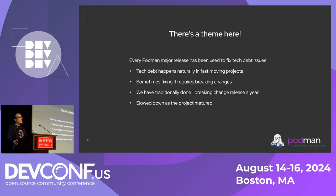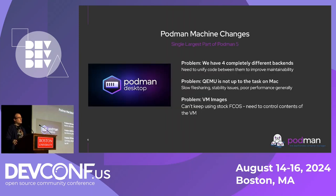Sometimes technical debt happens in user-facing places, in a way that we can't get rid of it without a breaking change. That's what major versions are for in our minds. We tried to maintain a 12-month cadence in the early days — saying we aren't going to introduce deliberate user-facing breaks that often, but we're still giving ourselves an off-valve, a chance to fix things. We are increasing the cadence to 24 months in recognition of us theoretically having a mature project.